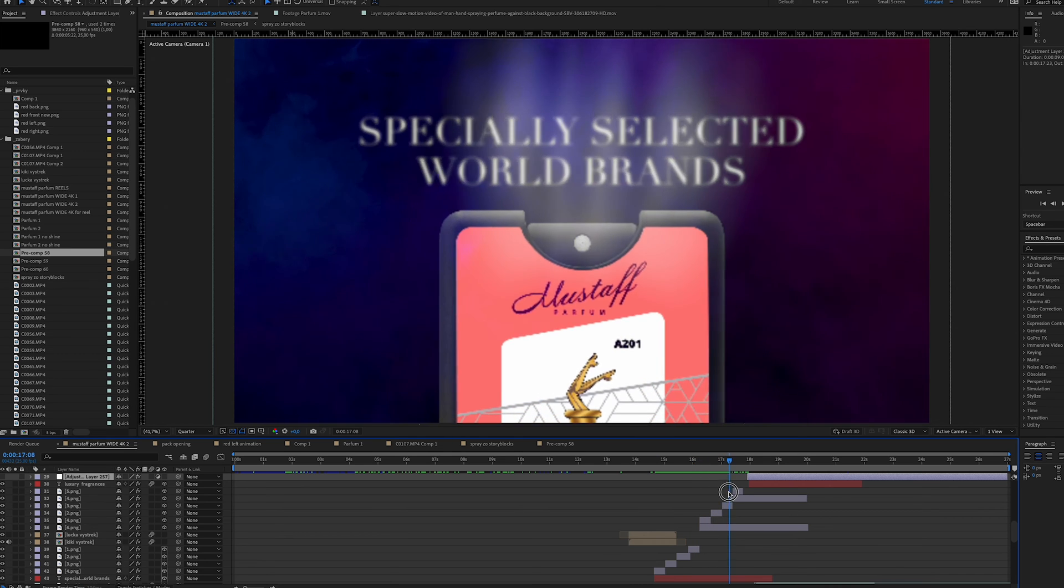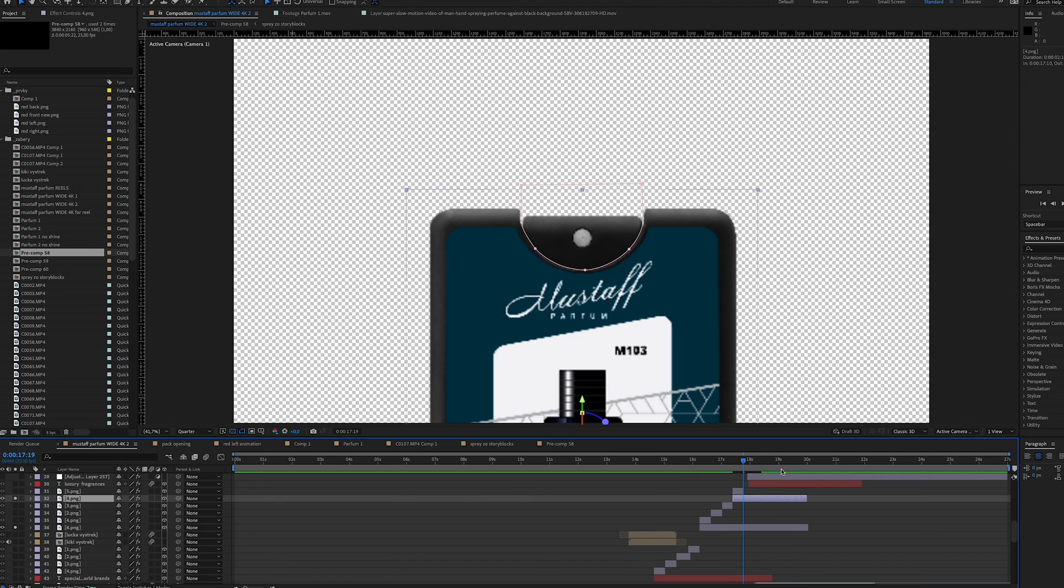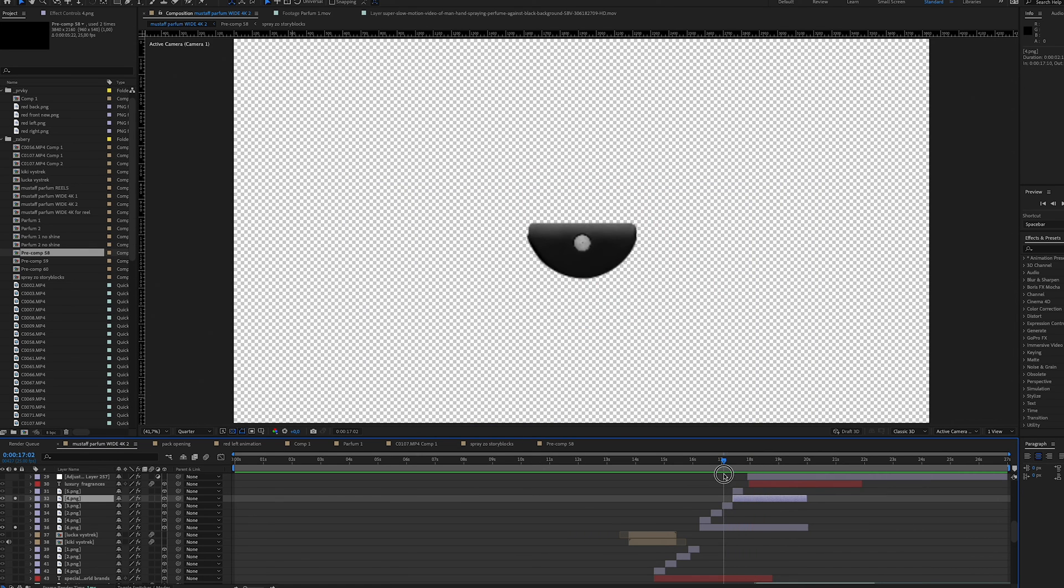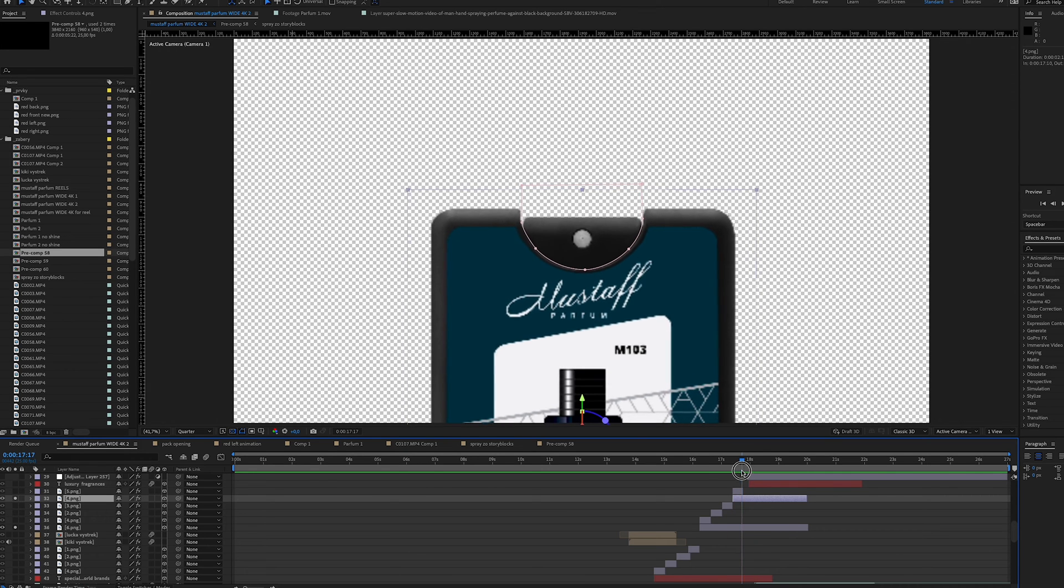On the last image where the spray effect is I basically duplicate the image, then mask out the bottle and mask out the spray part. After I animate the spray part of the perfume moving down and then back up.